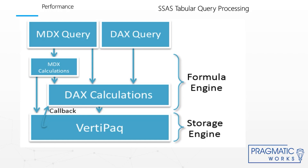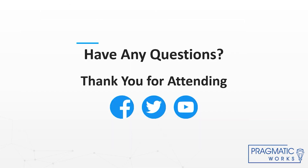The formula engine commonly runs several VertiPaq storage engine scans, materializes the query results in memory, joins the results together, and applies further calculations. However, if the formula engine determines that a particular calculation can be run more efficiently as part of the scan, and if the calculation is too complex for the storage engine to compute on its own — for example, an IF function or the LASTDATE function — the VertiPaq storage engine can send a callback to the formula engine. Though the formula engine is single-threaded, it can be called in parallel from multiple threads servicing a single VertiPaq scan.